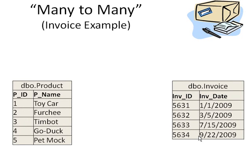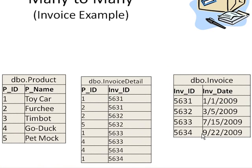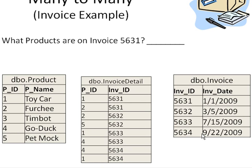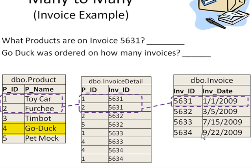Let's use a many-to-many example in the most common form it appears in business databases: the invoice example. What we have here is products and invoices. A product can be ordered many times by many different invoices. An invoice is kind of like one of those shopping carts when you go online — multiple items go on one invoice. So an invoice can have many products in its cart, and a product can be ordered on many different invoices. Here's our bridge table. What products were ordered by invoice number 5631? Looking at 5631, we see it is listed twice because this person ordered a toy car and a Furchie. How about the product GoDuck — how many times has that been ordered? GoDuck is listed on invoice 5633 and 5634. Therefore, there were two invoices, one on July 15th and one on September 22nd.